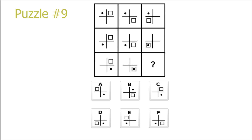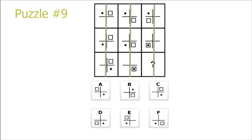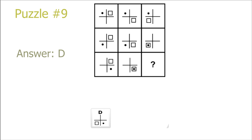Puzzle 9. This is another row and column puzzle. We see that the black dot repeats itself on every row in the same position, and for every square, we see that it repeats itself for every column. So in the last column, we have a white square on the bottom left, and on the last row, we have a black dot on the bottom right. So we have the answer D.